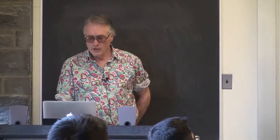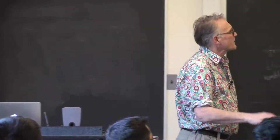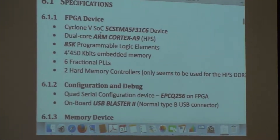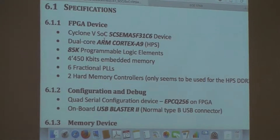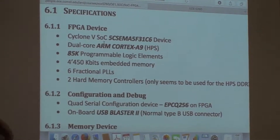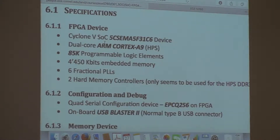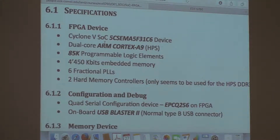The FPGA we're working with is a moderate-sized device. It has a dual ARM Cortex-A9, internally called ARM v7. There are 85,000 programmable logic elements — fairly heavy ones: six-input generalized gates plus two flip-flops and a carry chain. There's about four and a half megabits of on-FPGA memory organized as M10K blocks in Altera speak, which corresponds to 10 kilobits per block.